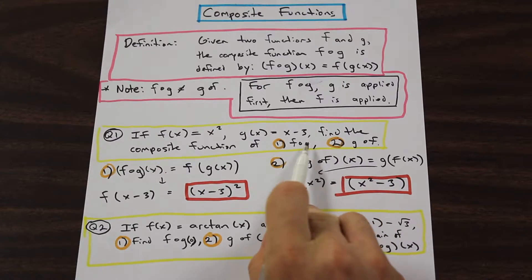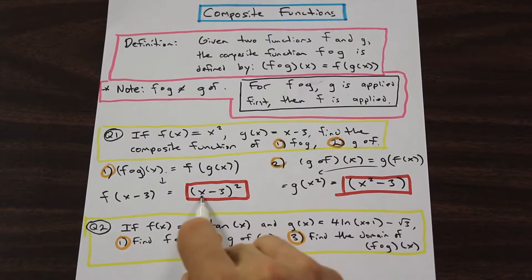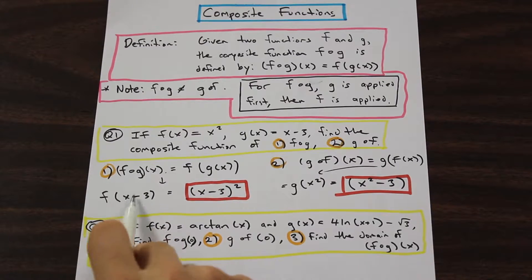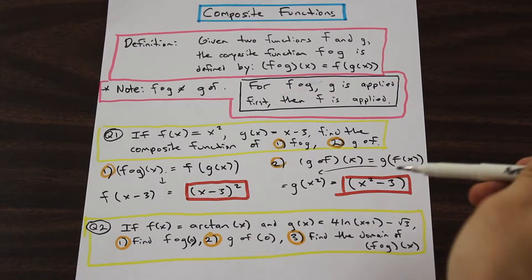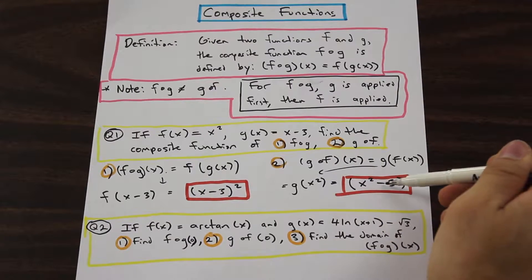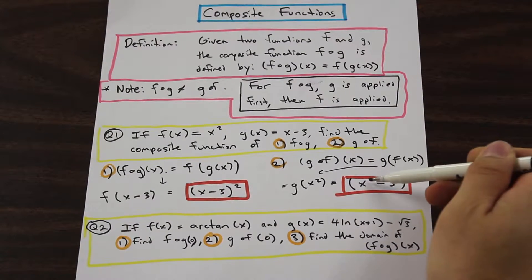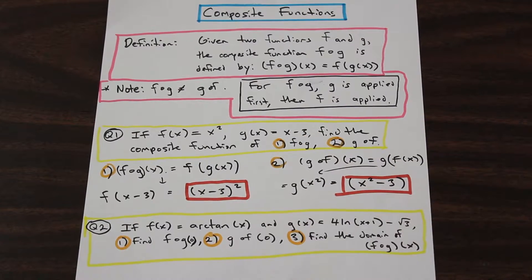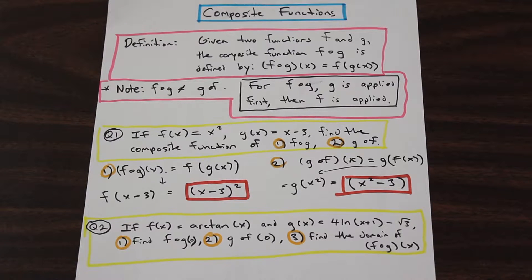So that's the difference: when we applied g first and then f, we squared the entire term (x minus 3). But when we applied f first and then g, the square did not apply to the negative 3 — just to the x. That's the trick to take away from that question. Just do a few problems in your book on this and you'll start to get the hang of it.